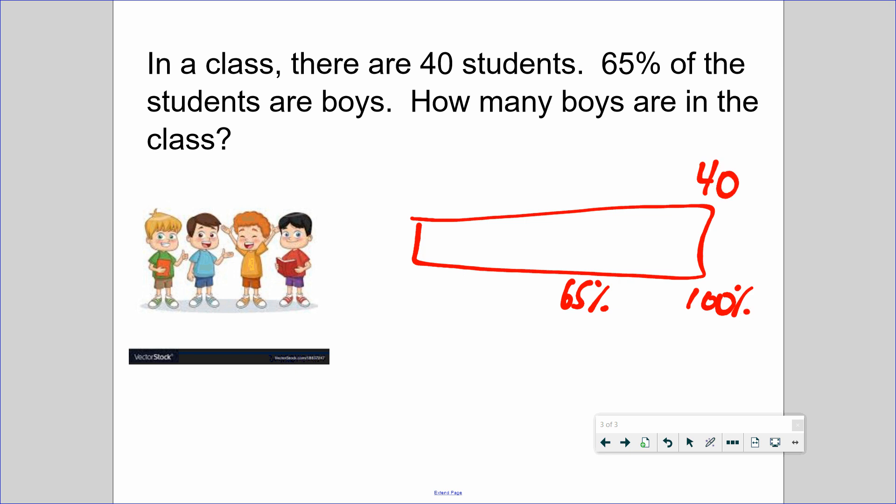How would you like to break this down? There's several ways. I'm going to use the benchmark percent 10%. So I divide by 10. 40 divided by 10 is 4 students, so every 10% is 4 students. So 20% would be 8, 30% would be 12, 40% would be 16, 50% would be 20, 60% would be 24, 70% would be 28. So it's between those, so I think the answer is 26.